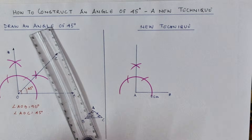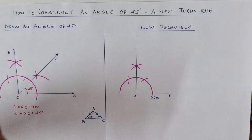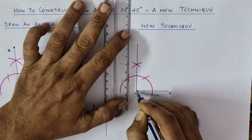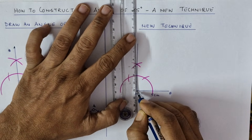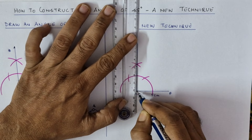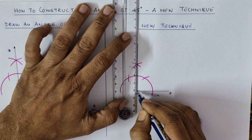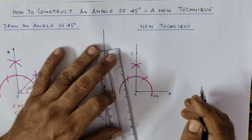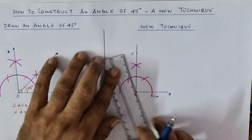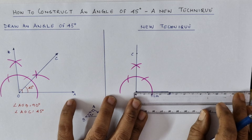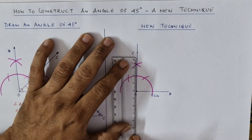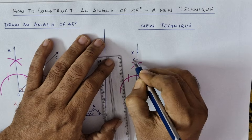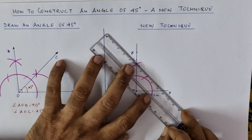Now this is 90 degrees. Let's measure five centimeters from A along the perpendicular ray — actually, this measures approximately four centimeters, so this one will be four centimeters. Let's mark this point as C. So AB is five centimeters and AC is five centimeters.